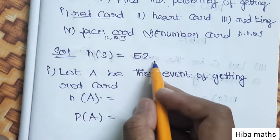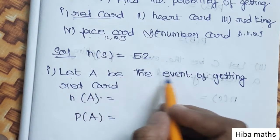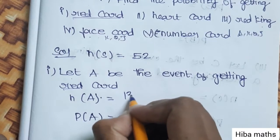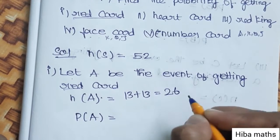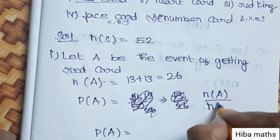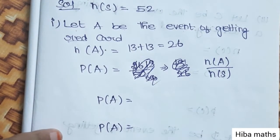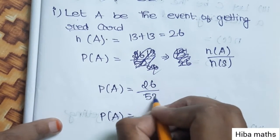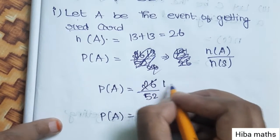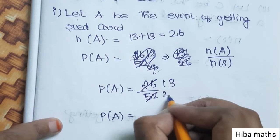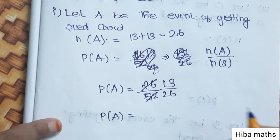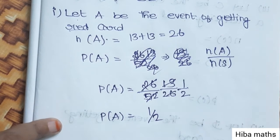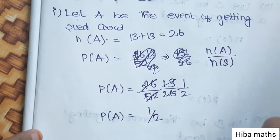Let A be the event of getting a red color card. Total sample space N of S is 52. N of A is 26, since red cards are 26 — that is 2 times 13. So P of A equals 26 by 52, which equals 1 by 2.